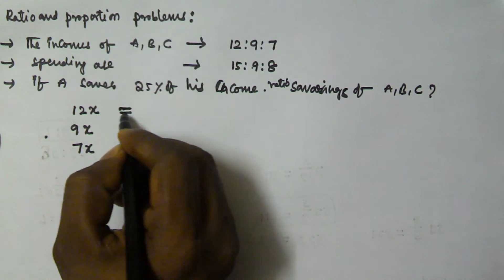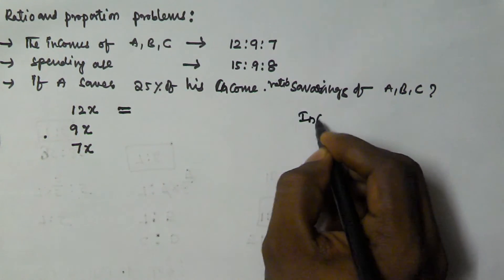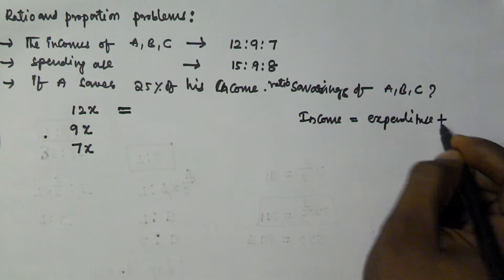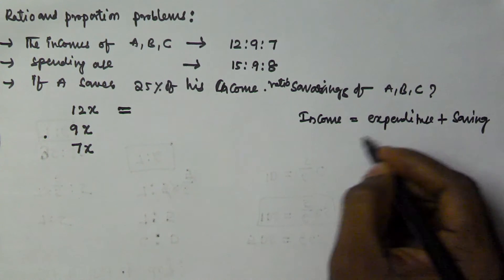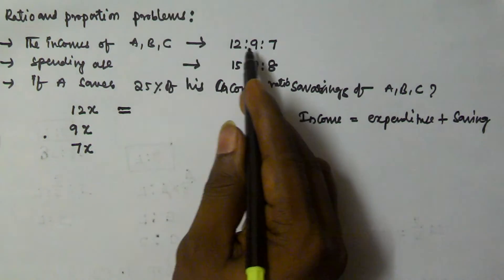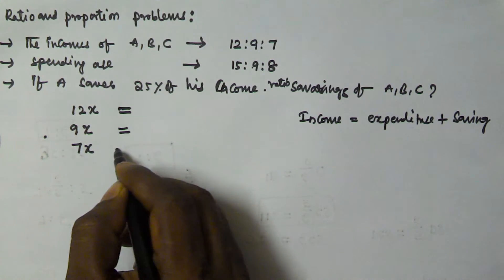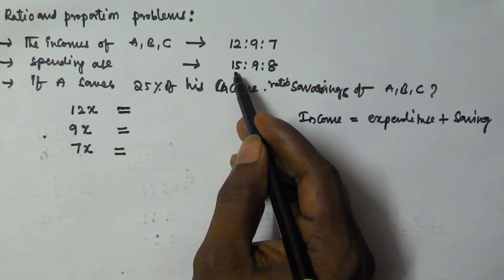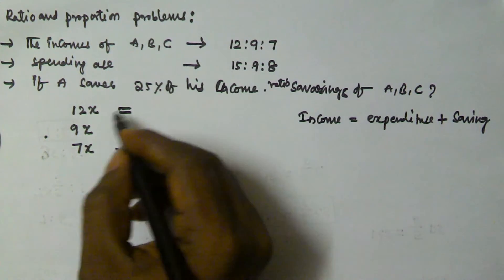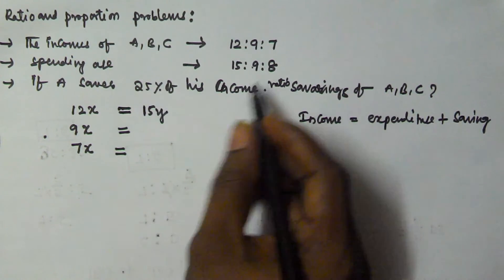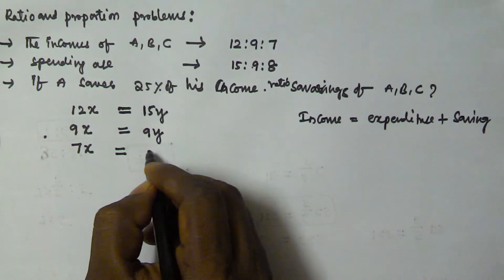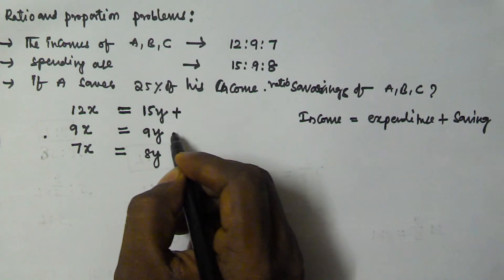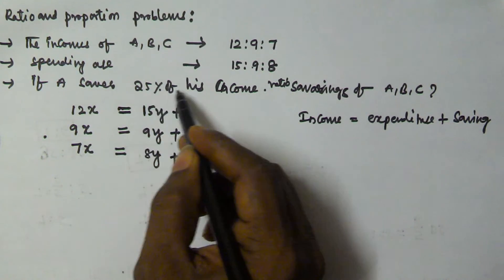We know that income equals expenditure plus saving. So A's income is 12x, B's income is 9x, and C's income is 7x. The spendings are in the ratio 15:9:8, so A's expenditure is 15y, B's expenditure is 9y, and C's expenditure is 8y.